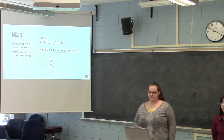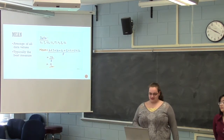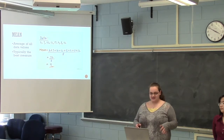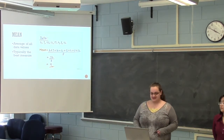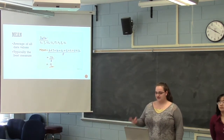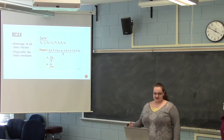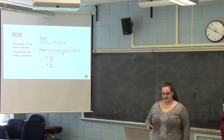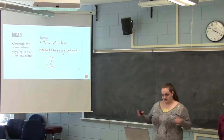The mean represents the average of all your data values. To find the mean, you take all your data values, add them together, and divide by the number of data values in your data set. In this example, all the numbers added together give 72, and there are eight data values, so 72 divided by 8 is 9 — the mean of this data set is 9. Typically the mean is the best measure of central tendency as it uses all of your data points.